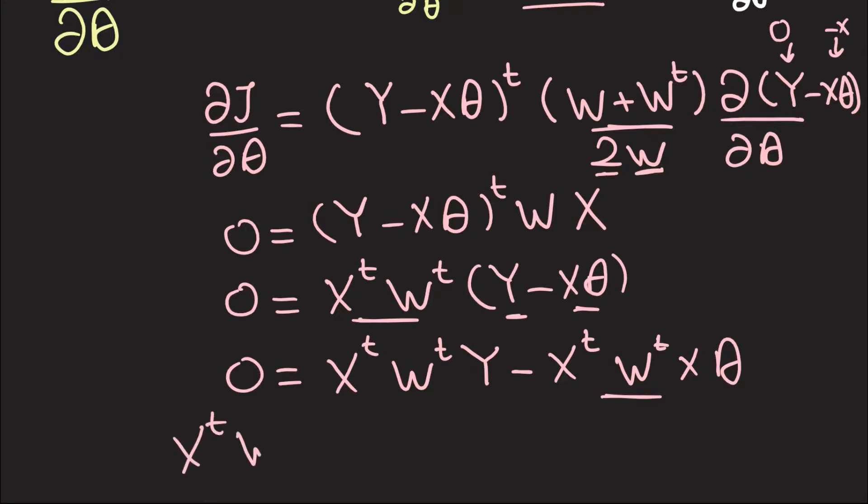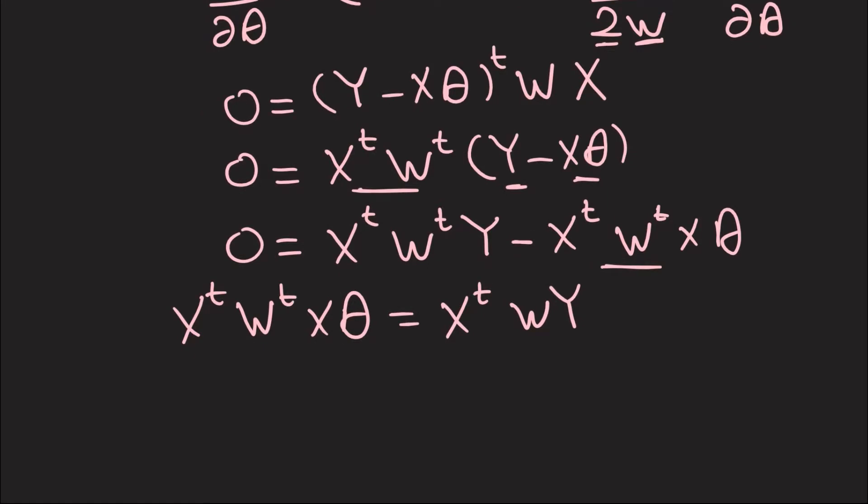And then, we can multiply both sides by x transpose w transpose from the left, so we get theta is equal to x transpose.